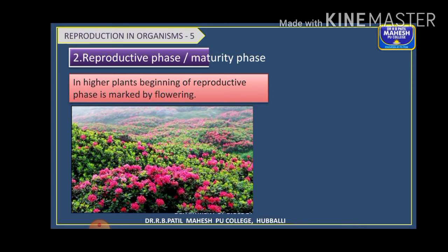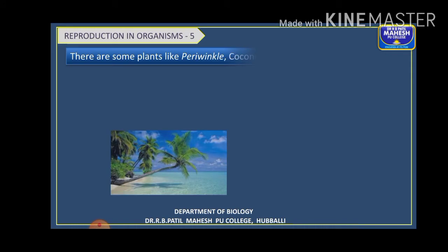During the reproductive phase, the reproductive organs develop. In higher plants, the beginning of the reproductive phase is marked by flowering. In animals, the reproductive organs develop and mature — this is what we call the period of puberty. In plants, the appearance of flowers marks the reproductive phase, because a flower is the specialized shoot meant for sexual reproduction.